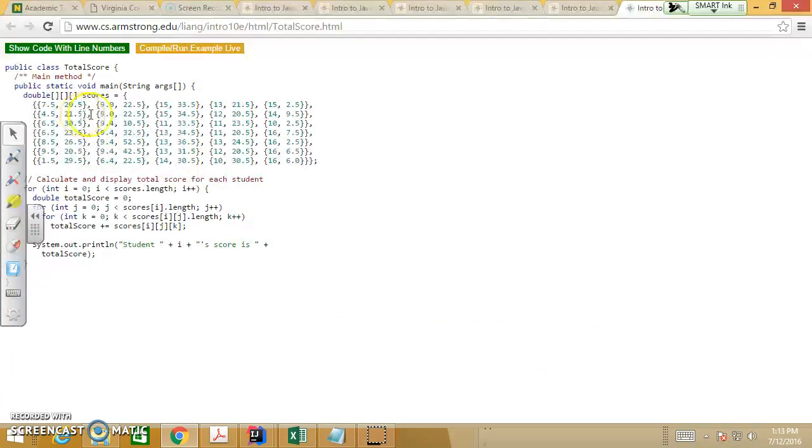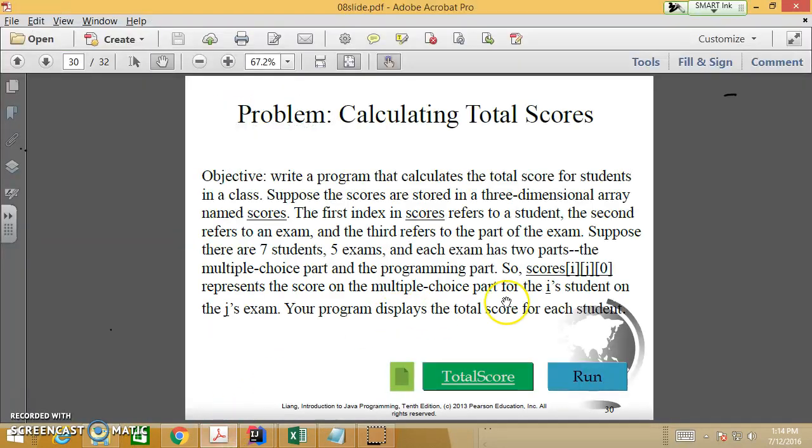So that's how we initialize the two-dimensional race we just talked about. And we need to do iterating with three loops. All right, so since the first row represents students, so we initialize the total score equal to zero after the first iteration. I, j is the columns, which is the exams, right? Exams, five exams.